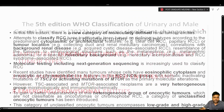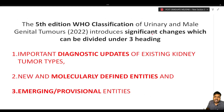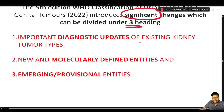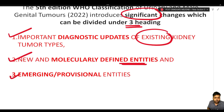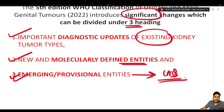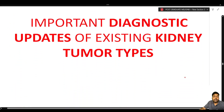The WHO Fifth Edition of the classification of urinary and male genital tumors introduces significant changes under three headings: important diagnostic updates of existing kidney tumor types, new and molecularly defined entities, and a group of emerging or provisional entities. The emerging or provisional entities group itself can serve as a long answer exam question.